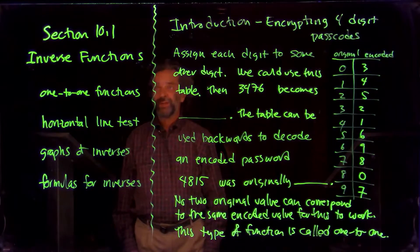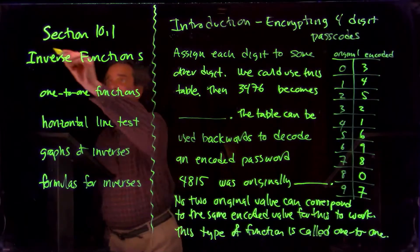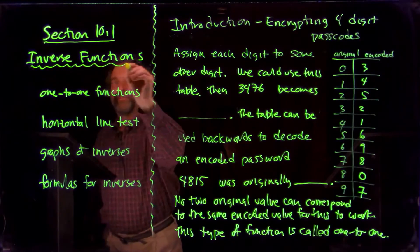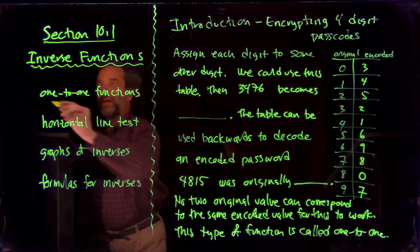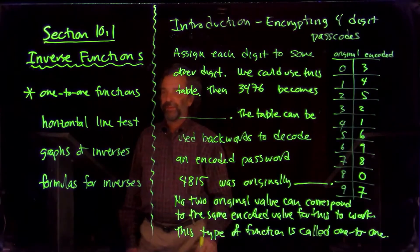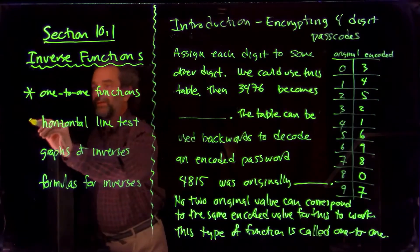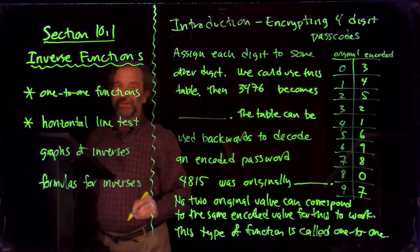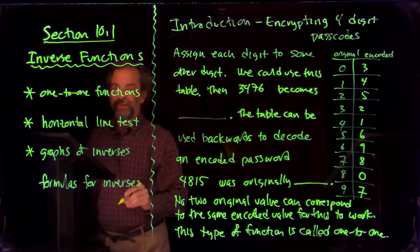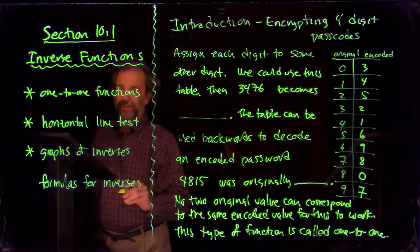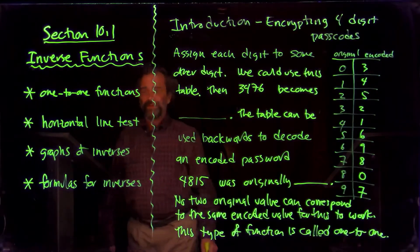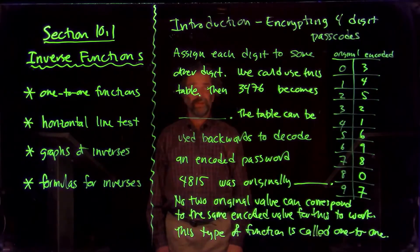We are in section 10.1, whose title is Inverse Functions. The topics are: one-to-one functions — it turns out we need one-to-one to have inverses; the horizontal line test for graphs to tell if a function is one-to-one; looking at graphs of inverses, if you know the graph of a function, how do you get the graph of the inverse; and looking at formulas for inverses, if you have the formula for a function, how do you find the formula for the inverse?